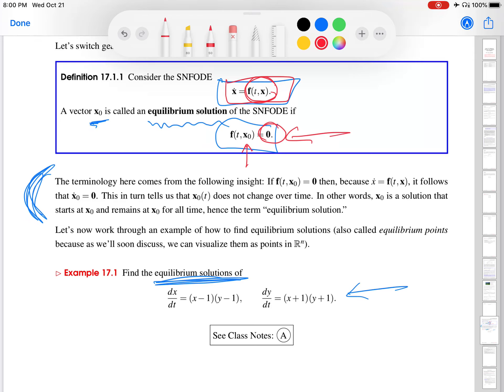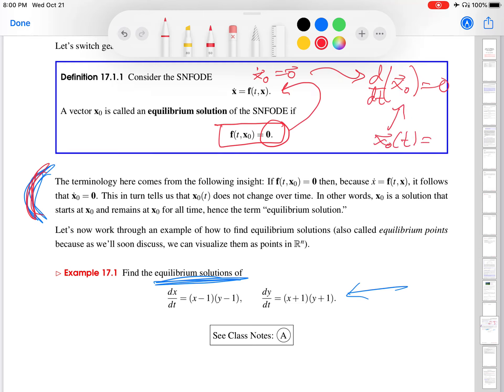That tells you how to find equilibrium solutions. We set the right-hand side equal to the zero vector and figure out what vector makes that true. Now, why do we call this an equilibrium solution? If x₀ is an equilibrium solution, then the right-hand side of the system is zero for that specific vector. And if the derivative with respect to time of anything is zero, then that something is constant in time. That's what you'd expect with the word equilibrium, meaning the system is not changing. No matter how long you wait, the system does not move anywhere.